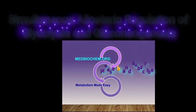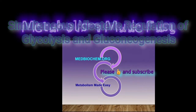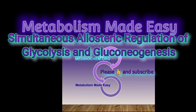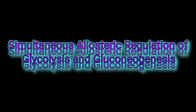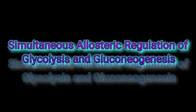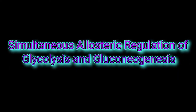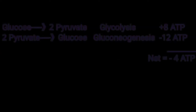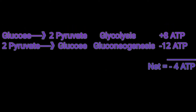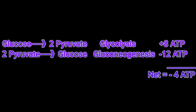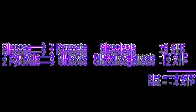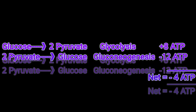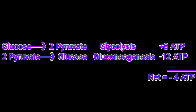This podcast is about the simultaneous regulation of glycolysis and gluconeogenesis by specific allosteric regulators. The breakdown of glucose by glycolysis to produce two molecules of pyruvate produces at most eight ATPs in energy.